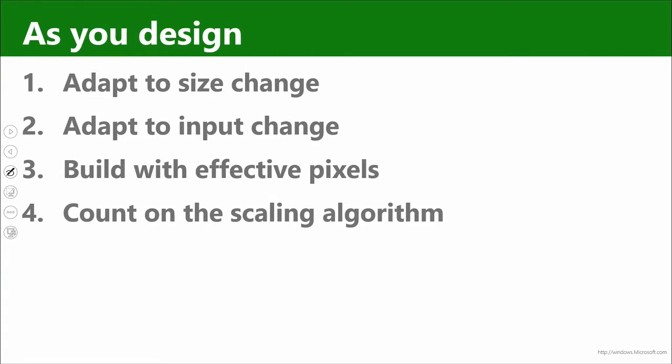There are a couple of other design considerations. You want to adapt to size changes, but also to input changes — as a user switches from mouse to pen to touch, you might need to spread things out or show different affordances. Remember: effective pixels is the only way to go. Don't try to measure and calculate physical pixels. Trust the system to properly scale and determine the effective pixel for your application.